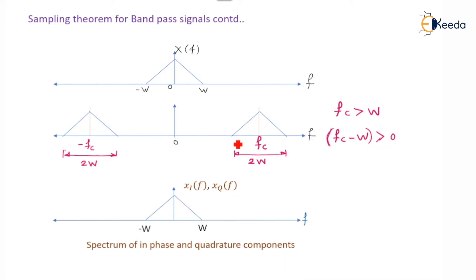We have the bandpass signal with a certain band gap provided. With respect to the reference, minus fc is the central frequency of one signal whereas fc is the central frequency of the other. These are the quadrature signals.